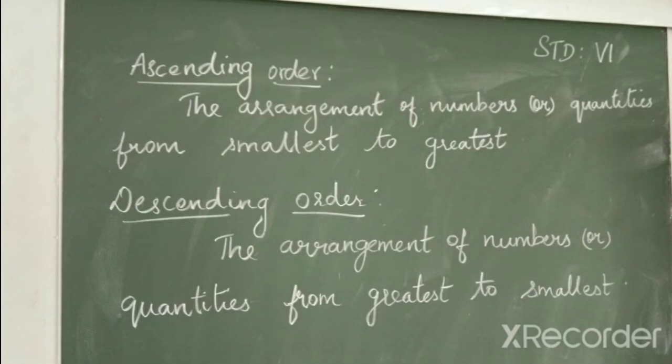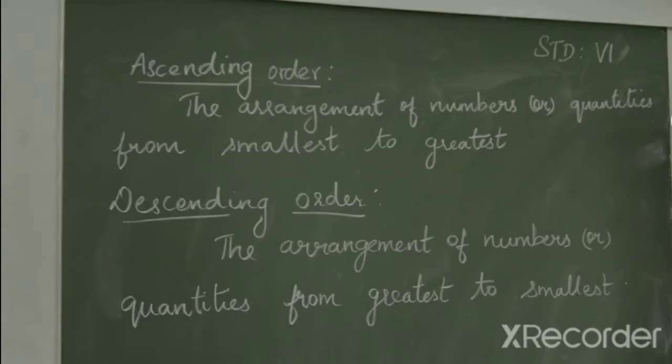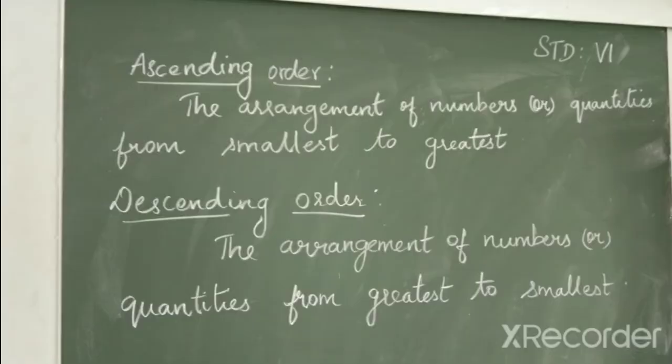Now, what is ascending order? As you have learnt in your previous classes, ascending order means arrangement of numbers from smallest to greatest. That is, the arrangement of numbers or quantities from smallest to greatest. That is your ascending order.